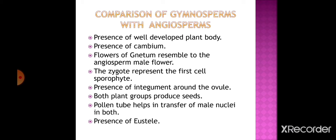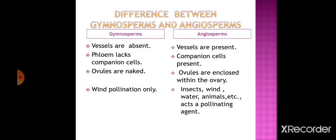Further similarities: the pollen tube helps in the transfer of the male nucleus in both angiosperms and gymnosperms. Both groups also show presence of a eustele - the arrangement of vascular bundles in the form of a ring around the pith - in both angiosperms and gymnosperms.